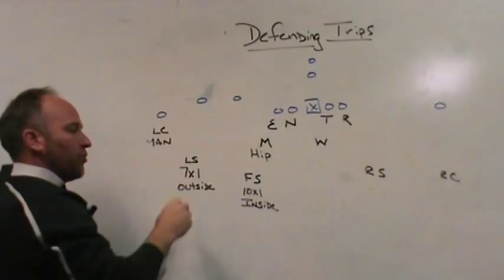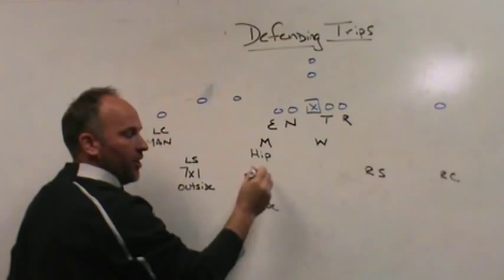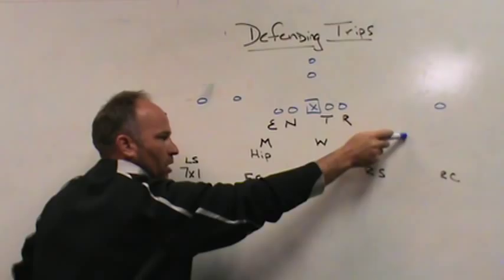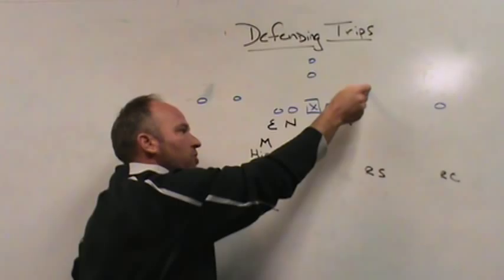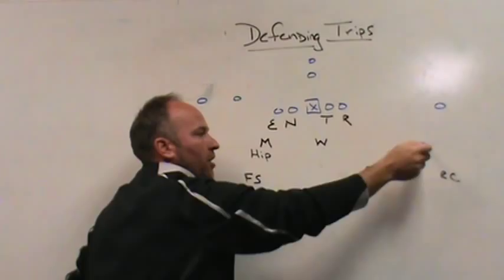The first strength is I'm going to out-leverage the bubble screen. Because I am going to roll down weak — which is the next strength of the coverage — I can handle three vertical with my front side free safety. That allows me to leave my backside safety and backside corner on the single side, which allows me to firm up my weak side D-gap runs while also allowing me to play two-for-one underneath our bracket coverage on the number one receiver, depending on what they're trying to do with their back out. I don't have to play man on the backside.